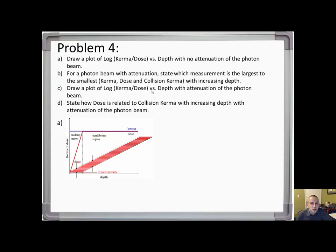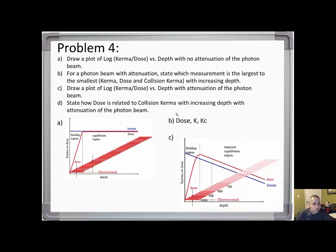The order is dose, kerma, and collision kerma. For part C, draw a plot of log kerma or dose versus depth with attenuation of the photon beam. Dose builds up in the buildup region and then carries on with transient equilibrium, along with kerma.